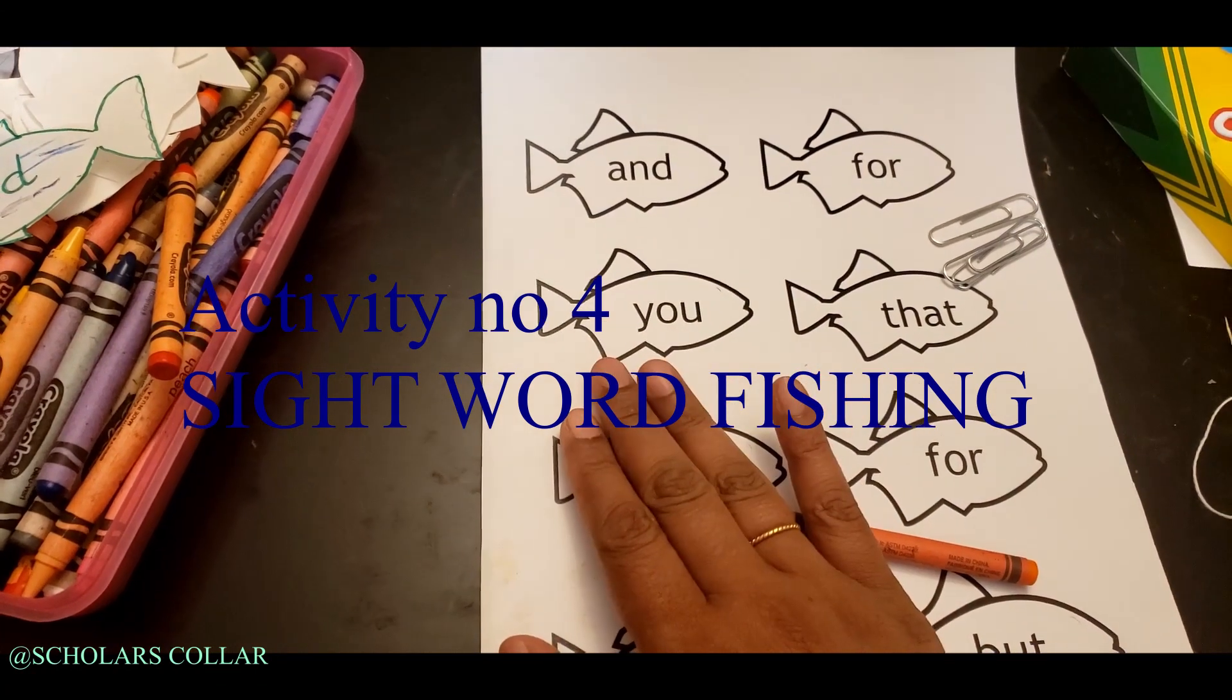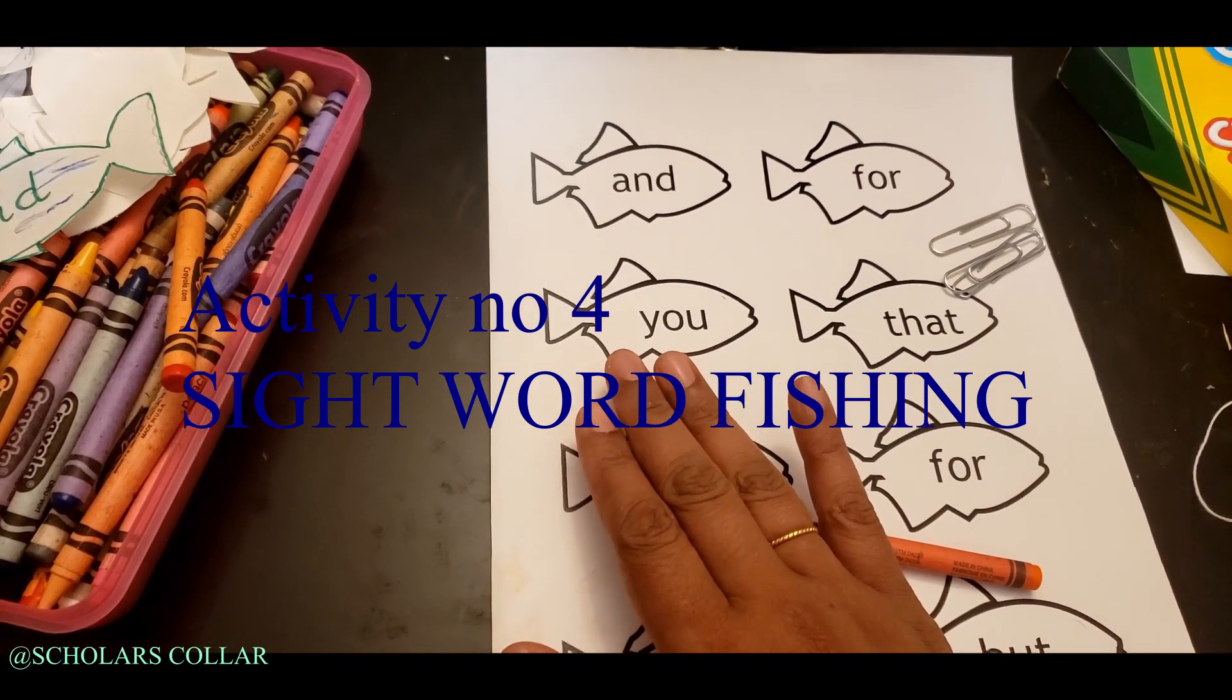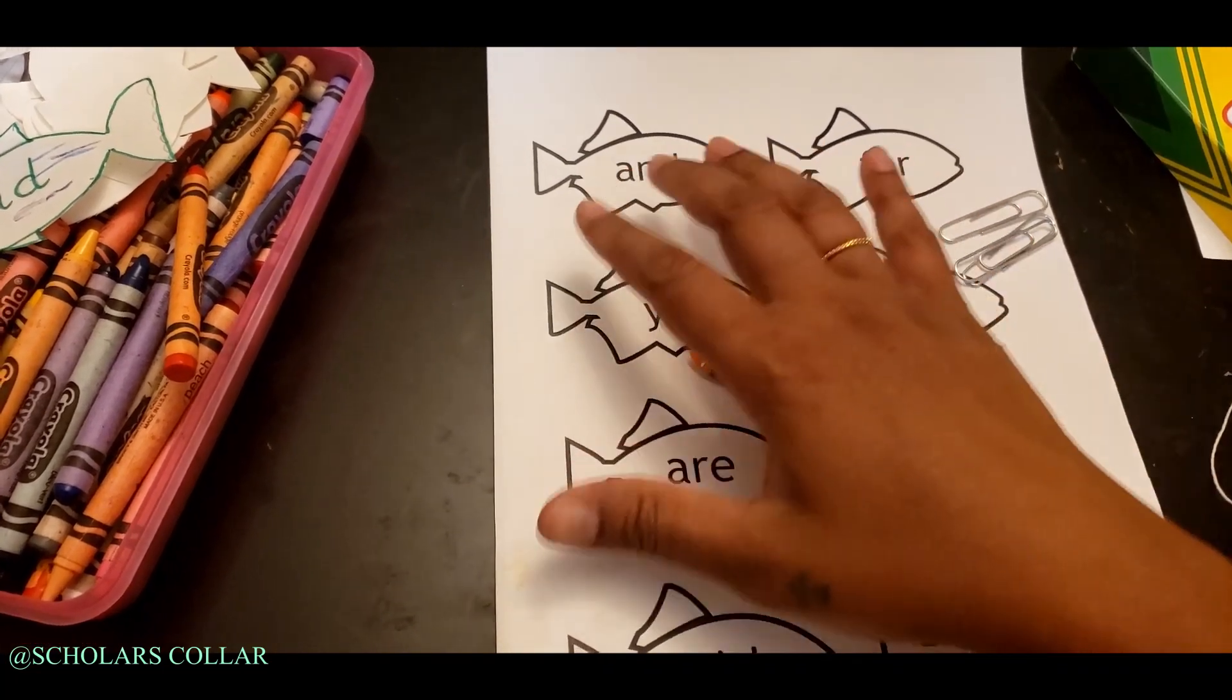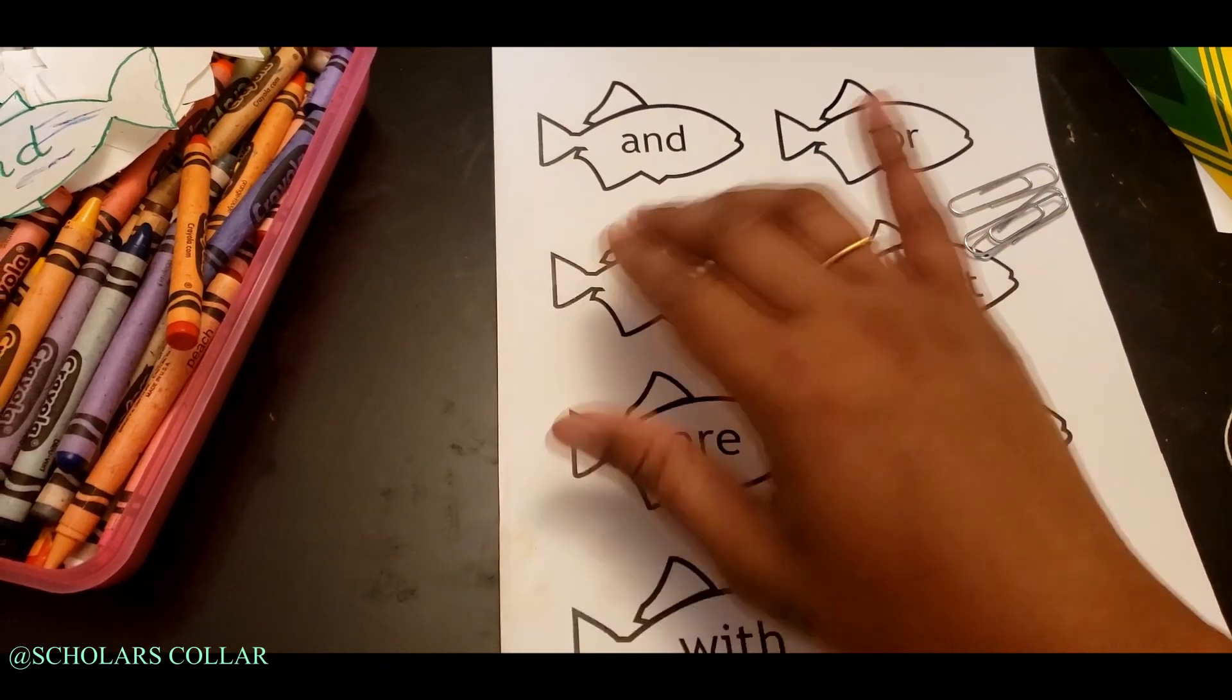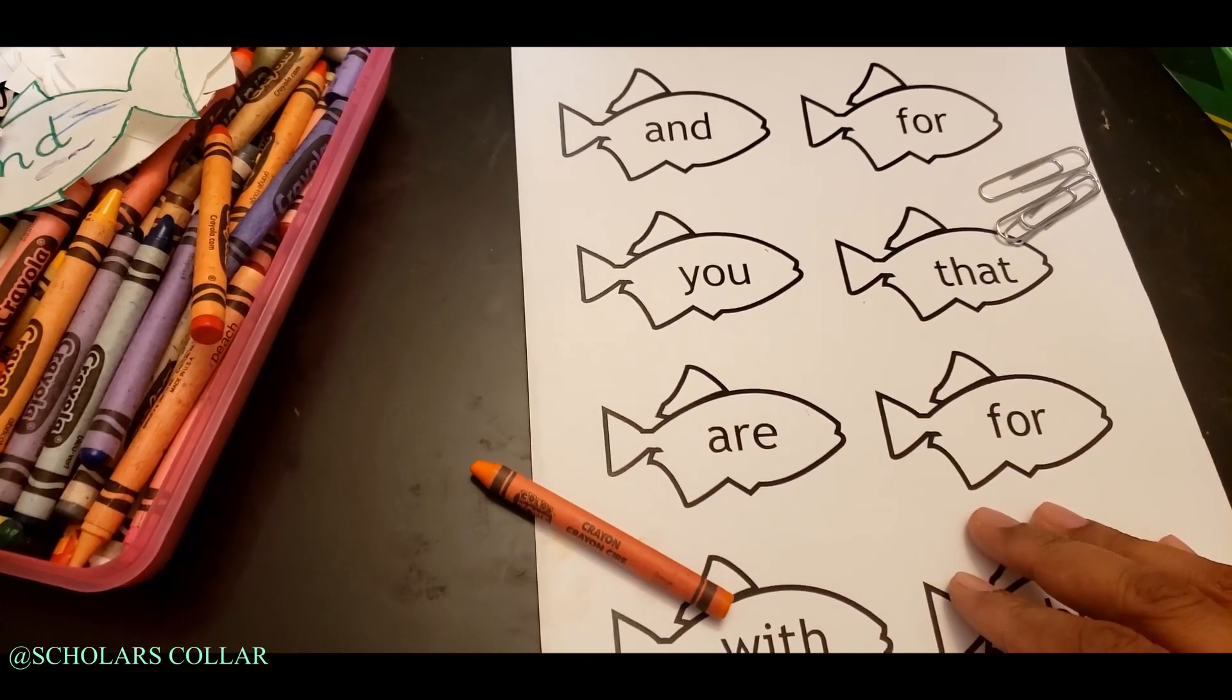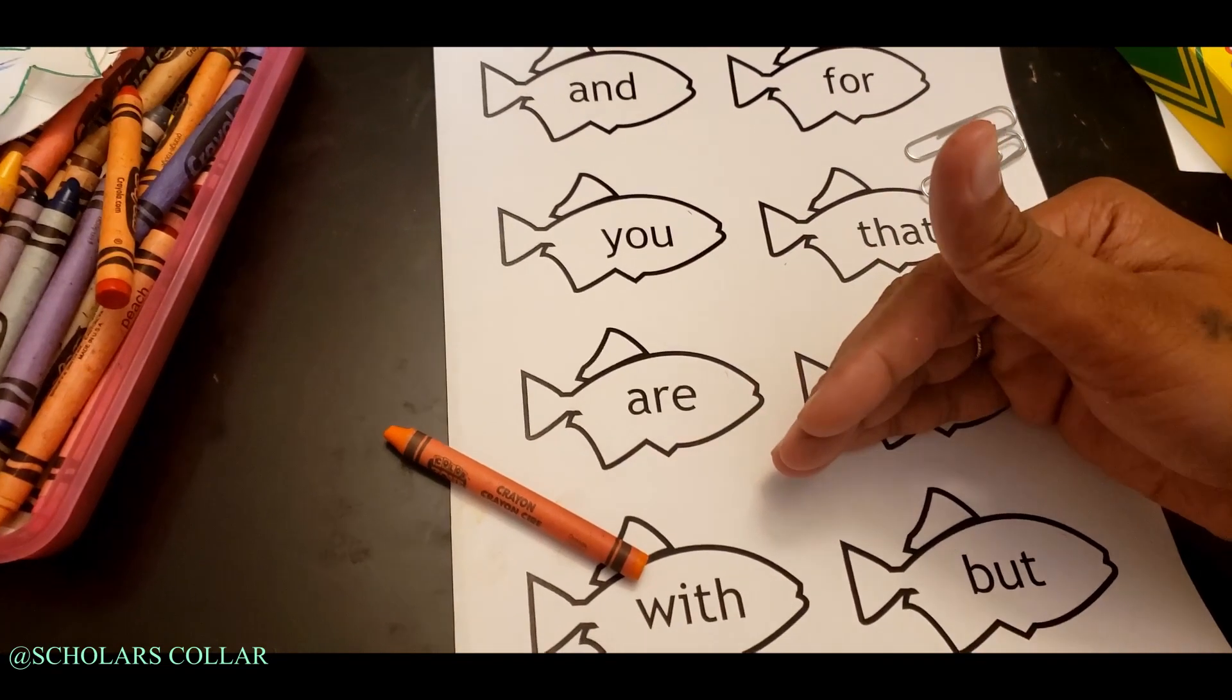Activity number four you've seen on the internet several times. If you need a paper that has the sight words and the fishes, please let me know. I'll provide that sheet for you for free—just comment below.